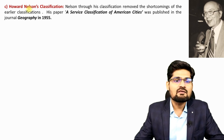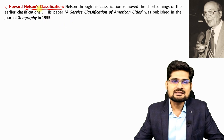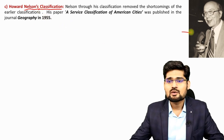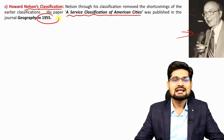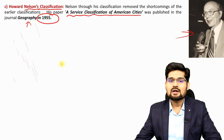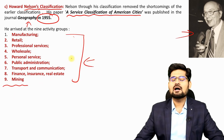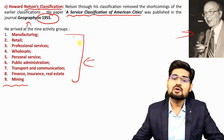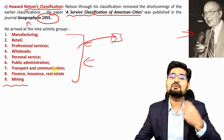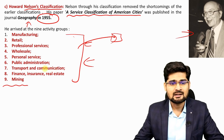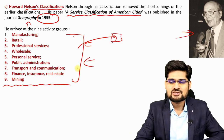Howard Nelson's classification is also a functional classification — his paper published in 1955 in the journal Geography is called a service classification of American cities. He also identifies nine major activity groups under which different towns have different functions. It's not necessary that one town will have all nine functions — one town could specialize in one, two, three or more functions. Together these criteria classify cities on the basis of their functional attributes.